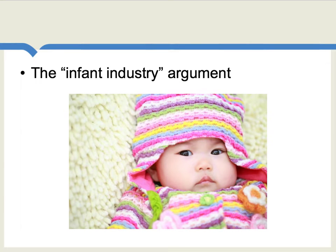A version of this argument is quite old and it was discussed extensively at least as early as the 19th century. It was called the infant industry argument. The claim there is that certain industries are in a sense like infants. They need to be fed, they need to be coddled, they need to be helped, and eventually they will grow up and be strong and healthy.